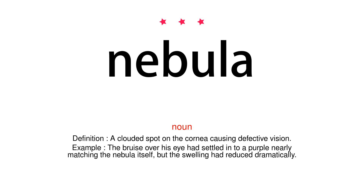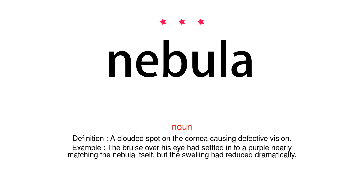Noun. Definition. A clouded spot on the cornea causing defective vision. Example. The bruise over his eye had settled into a purple nearly matching the nebula itself, but the swelling had reduced dramatically.